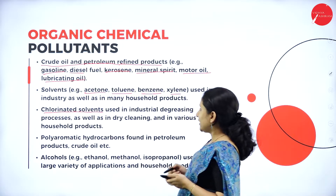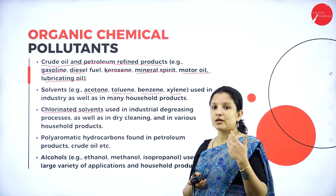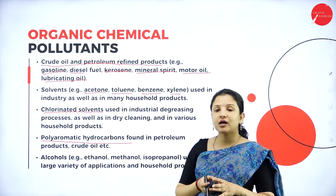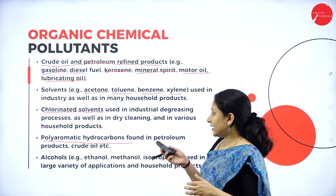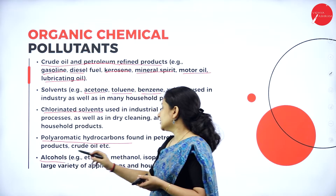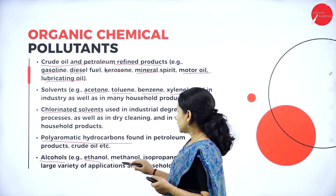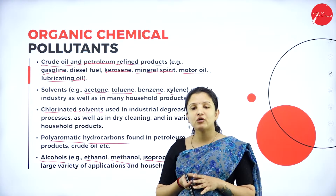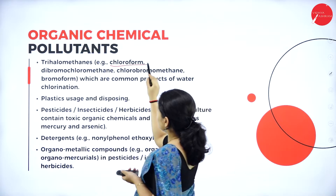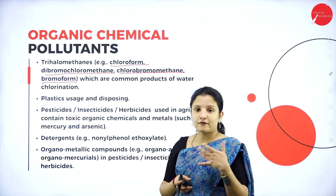Next is chlorinated solvents, which are used as cleaning agents in industries and are found in many household products. Next, polyaromatic hydrocarbons (PAHs) are hydrocarbons found in crude petroleum and petroleum products and are examples of organic chemical pollutants. Next is industrial alcohol — ethanol, methanol, and isopropanol — used in many household products and industries. Next, trihalomethanes such as chloroform, dibromochloromethane, chlorobromomethane, and bromoform are used for chlorination of water and can also cause chemical pollution.